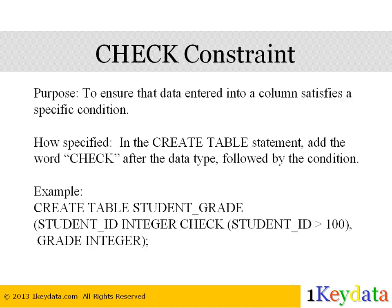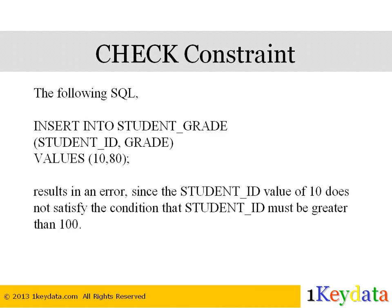The fourth constraint is the check constraint. A check constraint is used to make sure that data entered satisfies a certain criteria, thus ensuring data quality. The check constraint is specified when we create the table by adding the word check and then the condition after the data type. For example, for a student_grade table: CREATE TABLE student_grade (student_id INTEGER CHECK (student_id > 100), grade INTEGER). If we then attempt INSERT INTO student_grade (student_id, grade) VALUES (10, 80), it will result in an error because a value of 10 for student_id violates the check constraint, which requires that student_id be greater than 100.